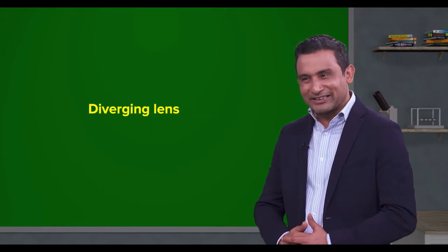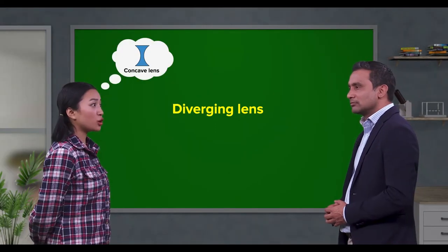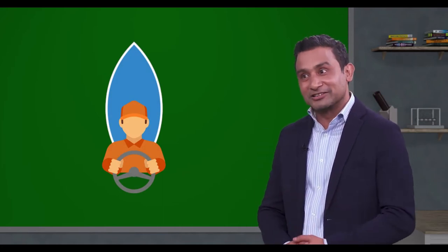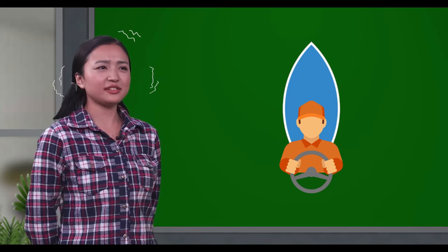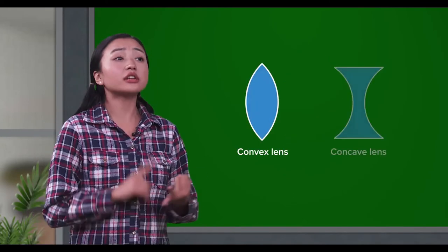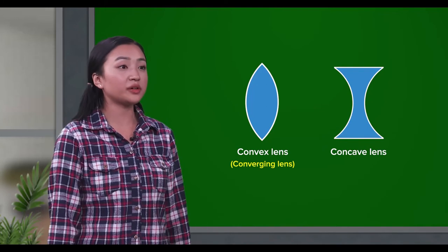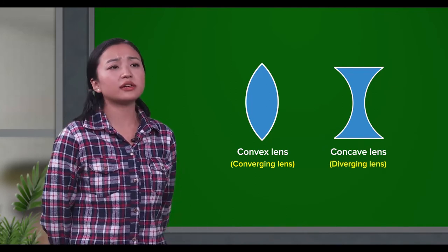Did you understand? Now, shall we study about diverging lens? Diverging lens is the concave lens, teacher. Yes, that's correct. You're a smart student. Now, I was thinking that diverging lens... Yes. I can't explain why it's called diverging lens, teacher. Convex and concave lens - convex lens is converging lens. I can explain that.